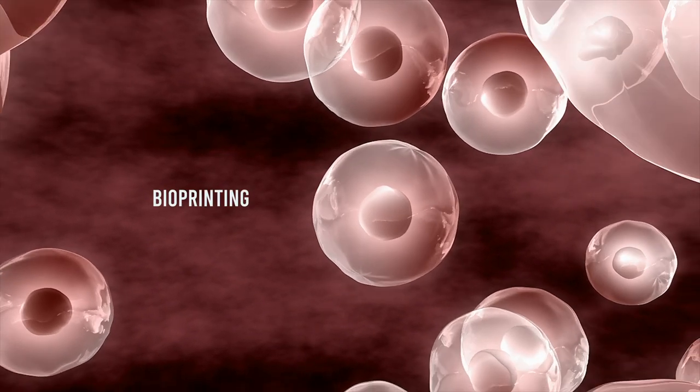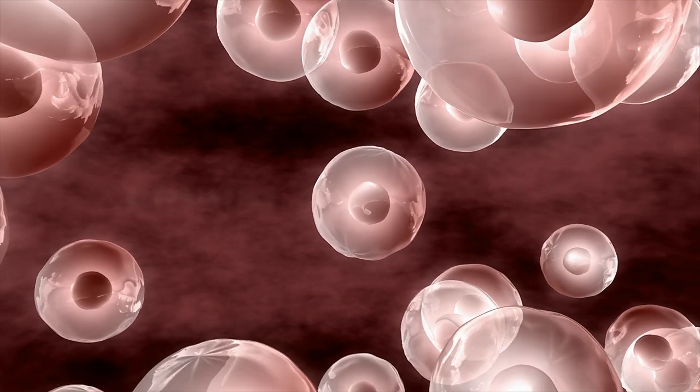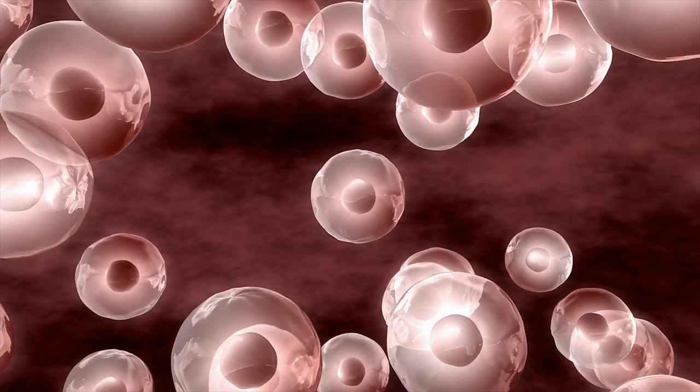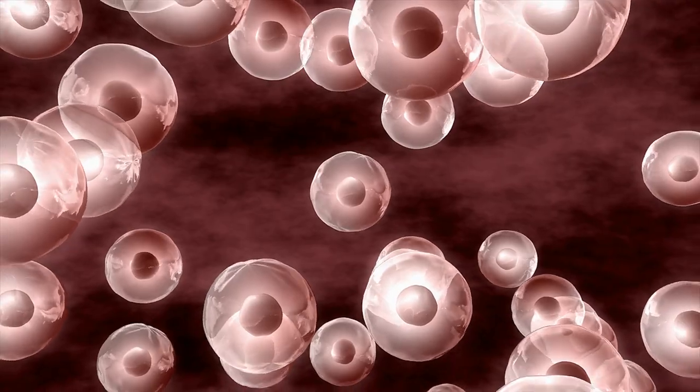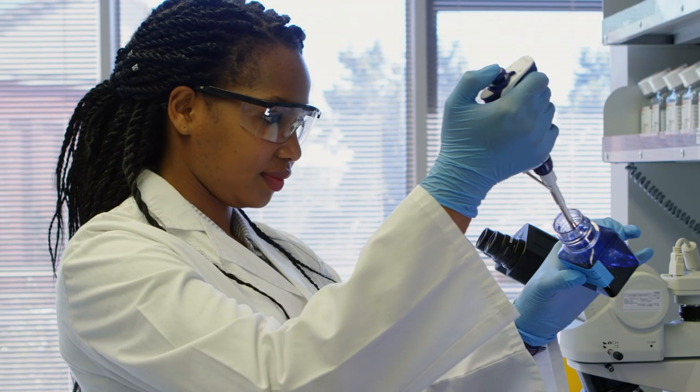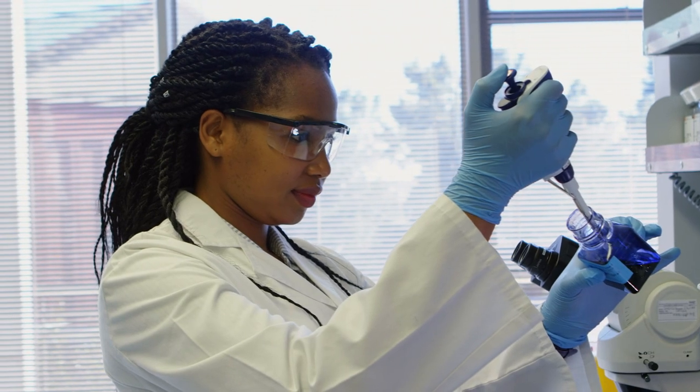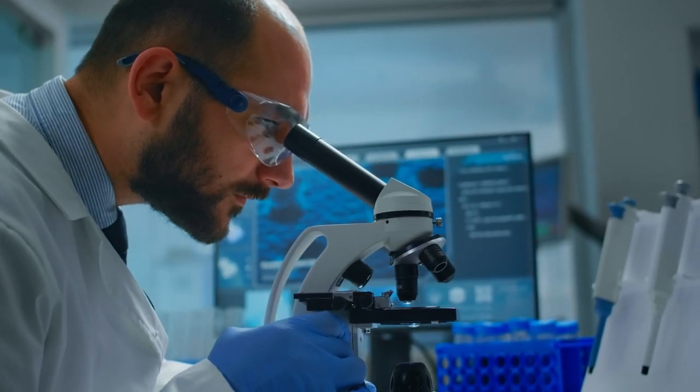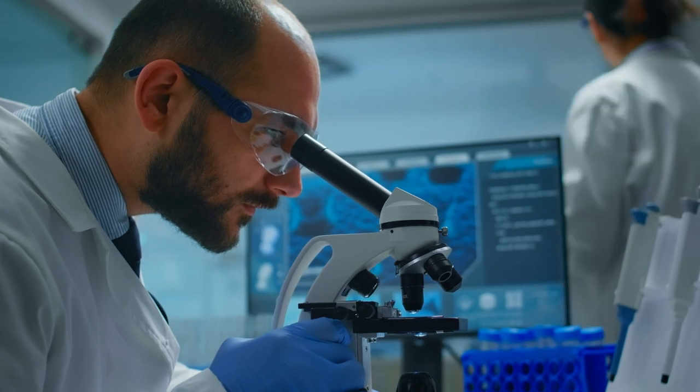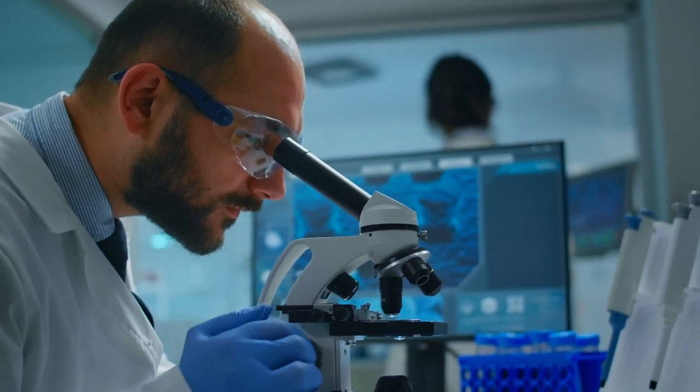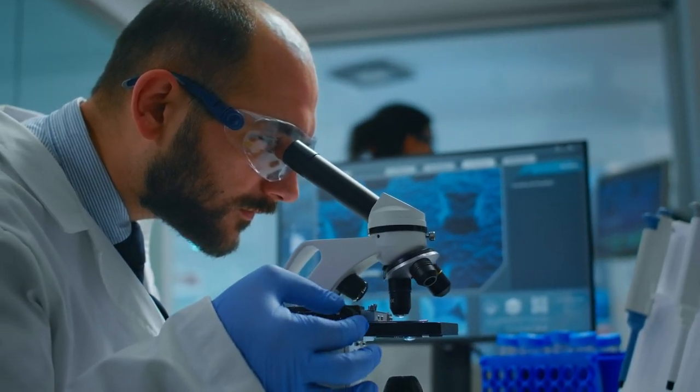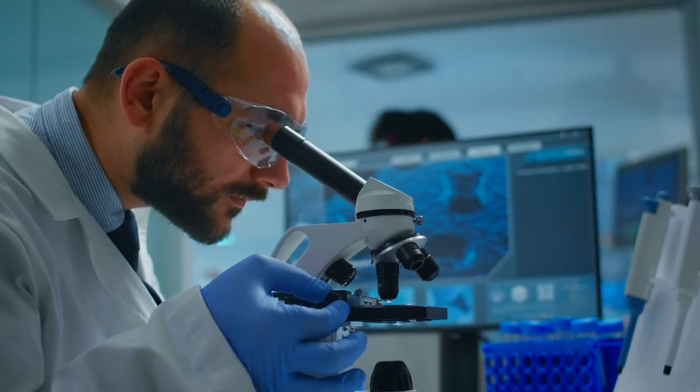Next up is bioprinting. This is where the real magic happens. Scientists take the cell-filled ink and put it into a cartridge. They then choose the right tools, kind of like picking different paintbrushes for different art projects. The scientists have to use different cells, inks, and equipment depending on what kind of tissue they're trying to build. It's like building a miniature work of art, but with living cells.